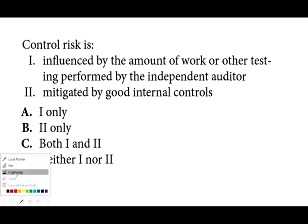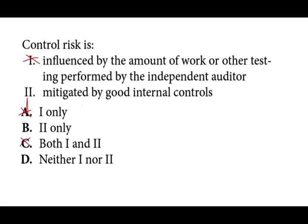Once you eliminate statement one, you can take out answer choices A and C on the exam. All you have to determine is whether statement two is correct: control risk is mitigated by good internal control. Yes — if the company has good internal controls, the control risk is mitigated by that. The answer is B. Control risk is not influenced by the amount of auditor work; it's influenced by how well the company has set up its internal controls.